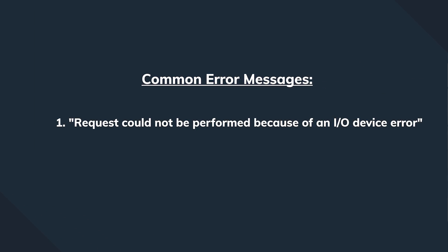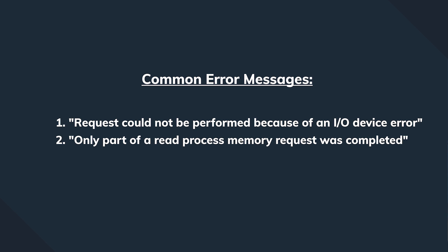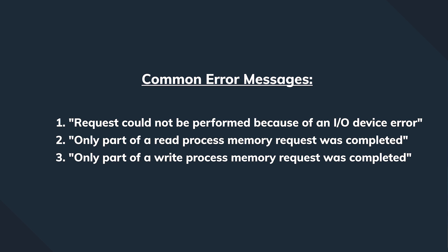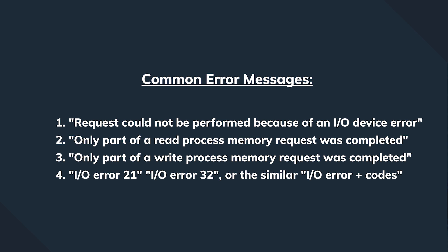You can identify the issue by seeing any of these messages: 'The request could not be performed because of an I.O. device error,' or 'Only part of a read process memory request was completed,' or 'Only part of a write process memory request was completed,' or sometimes I.O. error 21, I.O. error 32, or similar I.O. error codes that Windows detects.